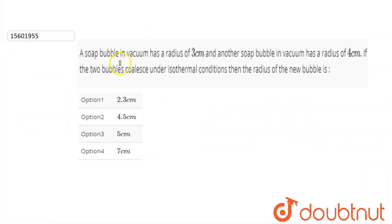Hello friends, we have a question of soap bubble. In the vacuum, it has a radius of 3 cm and another soap bubble in the vacuum has a radius of 4 cm. If the two bubbles coalesce under the isothermal condition, then the radius of the new bubble. Okay?